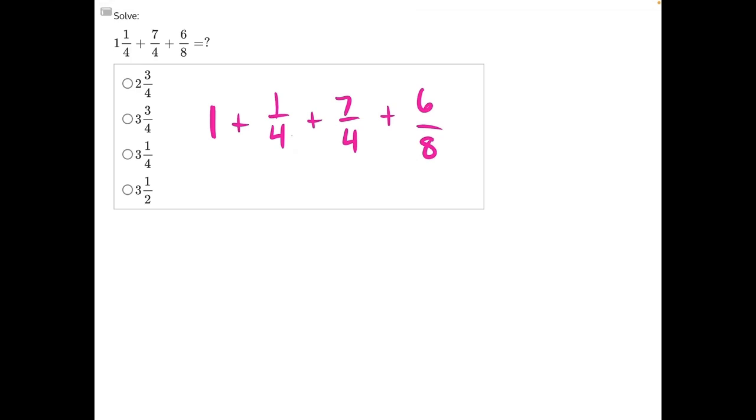In this case, these fours would stay the same, and eight would need to be divided by two to give us four. And whatever we do to our denominator, we have to also do to the numerator. So six divided by two would give us three.